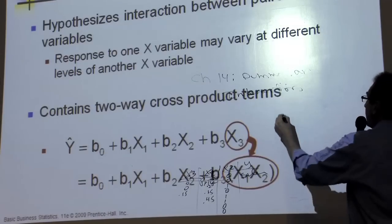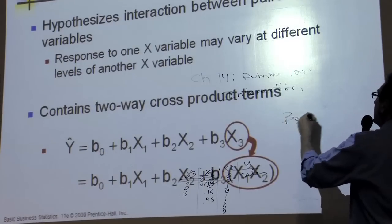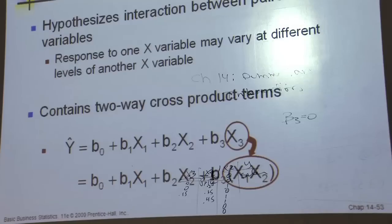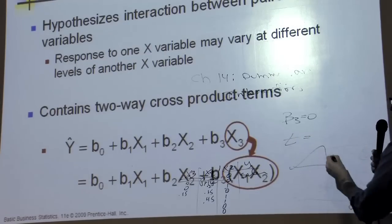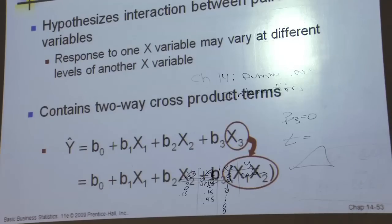And if it turns out, like by the t-test, beta 3 equals 0, and if it turns out you accept that hypothesis, that means that there is no interaction, and if it turns out you reject that hypothesis by the t-test, as we learned early on in Chapter 14, then that proves there is interaction.